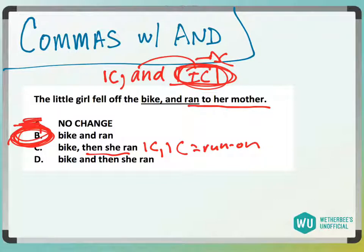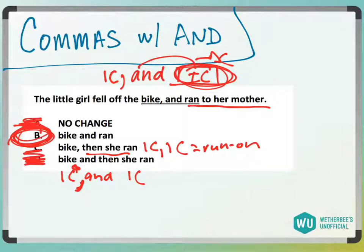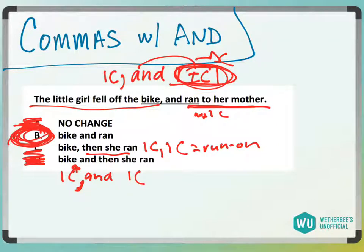And then D would be an independent clause and another independent clause — in this instance we would have to have a comma, and D does not have that, so D is gone. And answer choice B — we don't need a comma because 'the girl fell off the bike' is independent and 'ran to her mother' is not independent, so no comma there. Answer choice B.